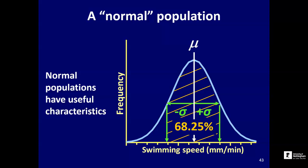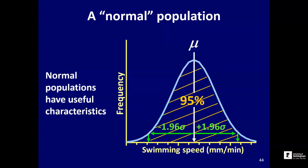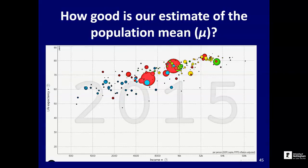One crucial property of the normal distribution is that about 68% of individuals in a population will lie within one standard deviation of the mean. And exactly 95% of the population will lie within 1.96 standard deviations of the mean. So we can use the standard deviation to quantify the proportion of individuals we'd expect to find in any particular range of the measured variable. To show how this is useful, we're going to look at data from the human population on life expectancy.